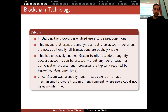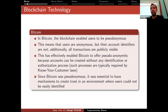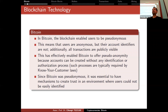Since Bitcoin was pseudonymous, it was essential to have a mechanism to create trust in an environment where users could not be easily identified. At the end of this semester, we will also talk about zero-knowledge proofs, where this pseudo-anonymity actually turns into anonymity. There are some cryptocurrencies where, when you look at the blockchain, you cannot see which account sends what amount of money to whom.